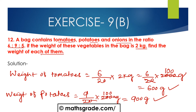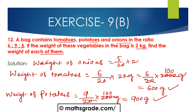Now weight of onions: 5 divided by 20, multiplied with 2000 g, which equals 5 multiplied by 100, that is 500 g. Weight of onions is 500 g. Weight of tomatoes is 600 g and weight of potatoes is 900 g.